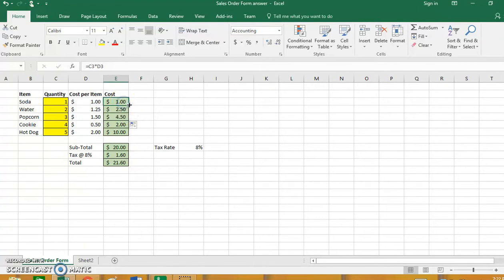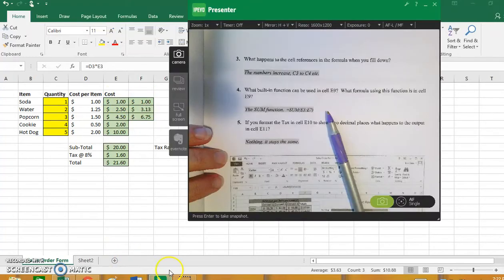If I were to take that and fill it to the right, then what would change are the letters. So instead of being C and D, it would be D and E. So it increased the C by one cell and it increased the E by one cell. And then again if I filled that down it would still work. So filling across changes the letters. Filling down changes the numbers.